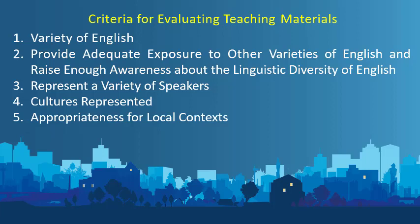There are criteria for evaluating teaching materials, which we may organize into five categories. The first is variety of English. Multiple varieties of English are used successfully in international communication, which implies that we have a wide variety of English to choose from when selecting an international model for instruction. For example, in Hong Kong, ideal materials would expose learners to the kind of Hong Kong English used in business as well as for social purposes, as seen in Matsuda and Friedrich in 2011.